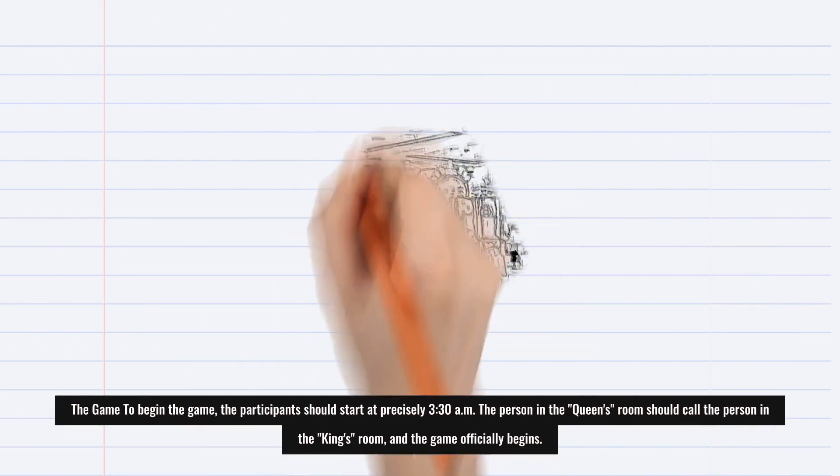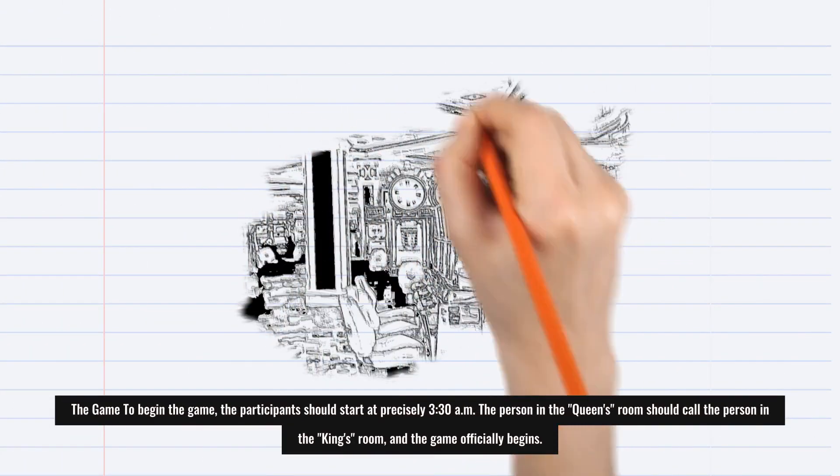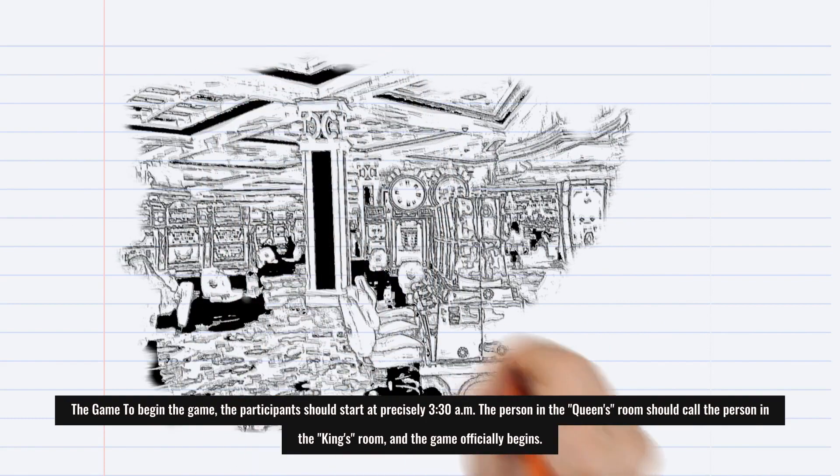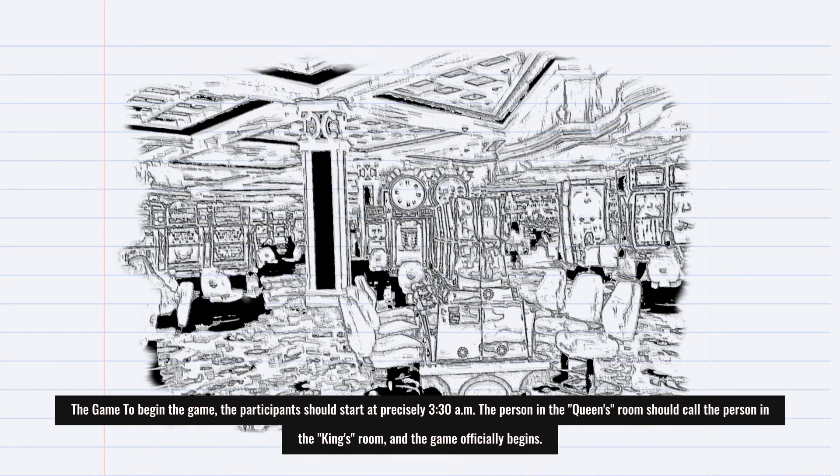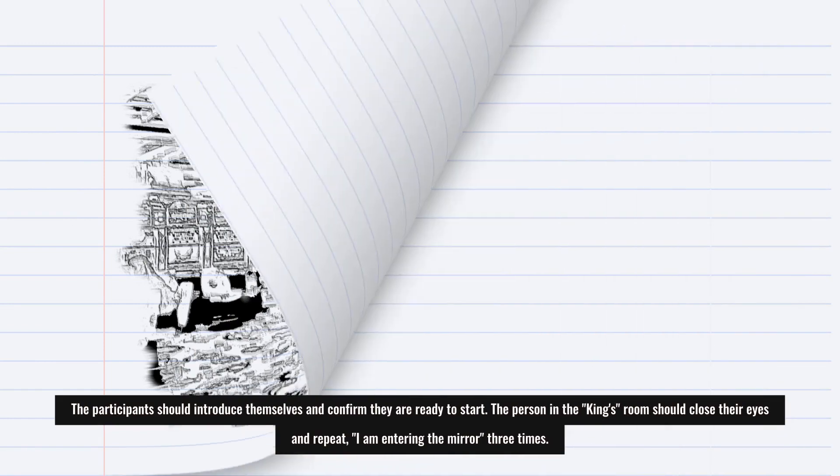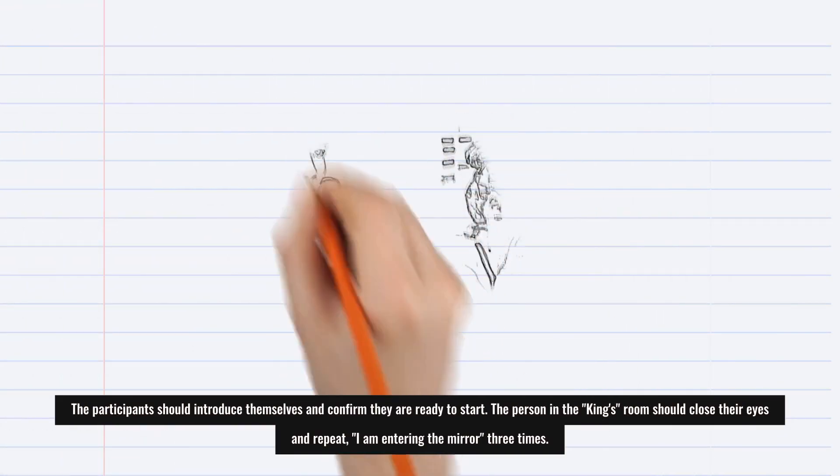To begin the game, the participants should start at precisely 3:30 AM. The person in the queen's room should call the person in the king's room, and the game officially begins. The participants should introduce themselves and confirm they are ready to start.